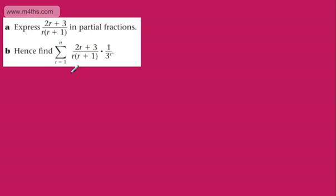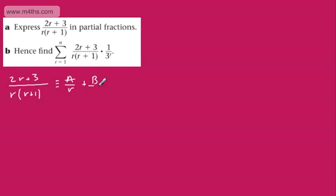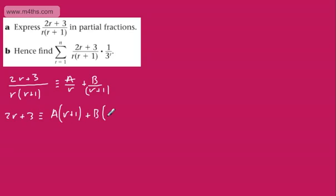I'm going to think of a way of approaching this, but to begin with we'll do the first part. So let's use partial fractions: 2R plus 3 over R, R plus 1. We can set an identity and say this is going to be A over R plus B over R plus 1. Multiplying through by the denominator, we're going to have 2R plus 3 on the left-hand side, and on the right-hand side we'll have A times R plus 1 plus B multiplied by R.